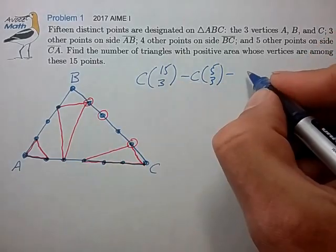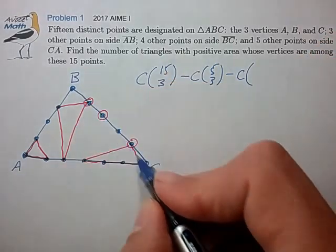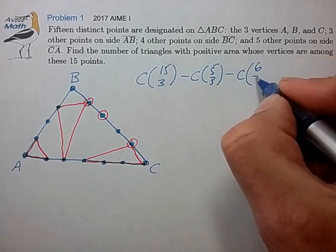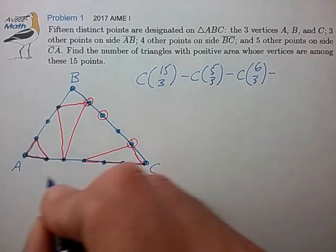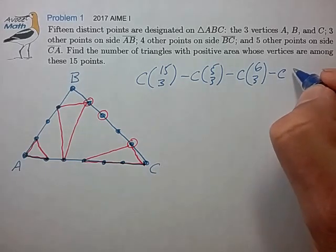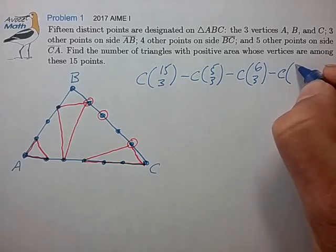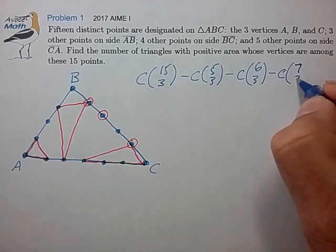From side BC, we can form invalid triangles in C(6,3) ways. And side AC, we can form invalid triangles in C(7,3) ways. And I think that's right.